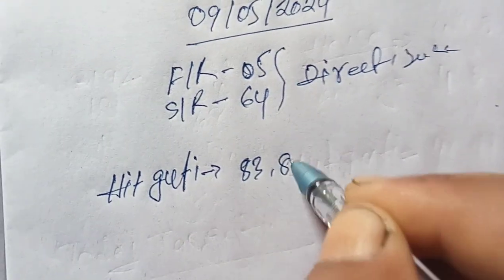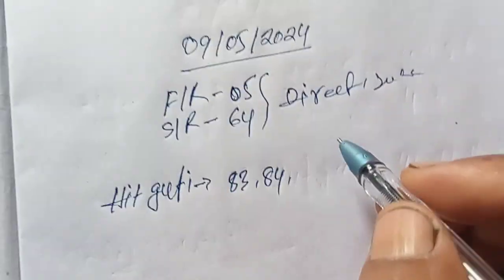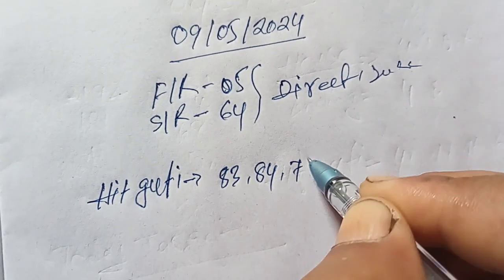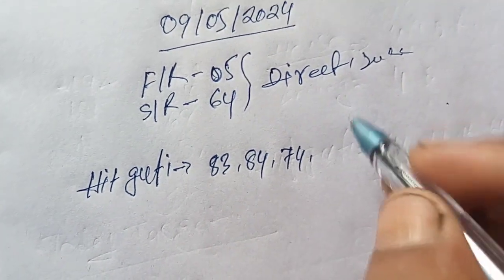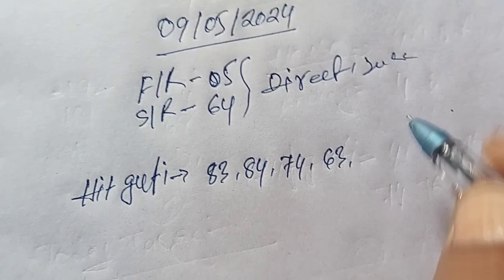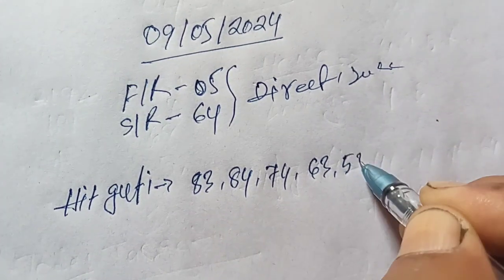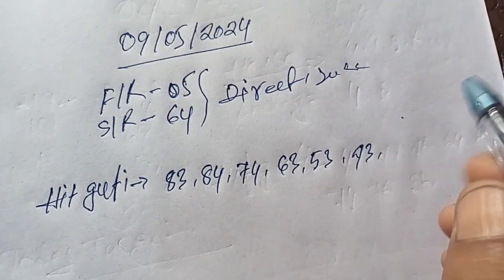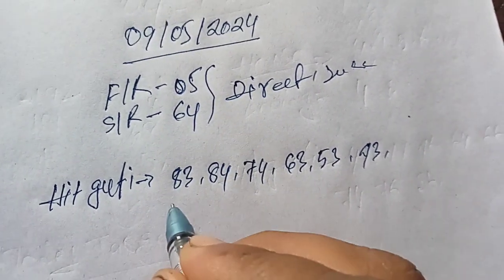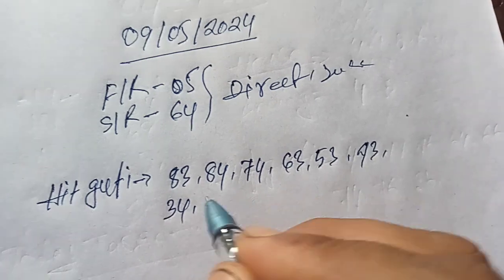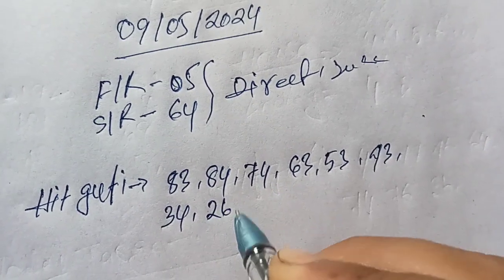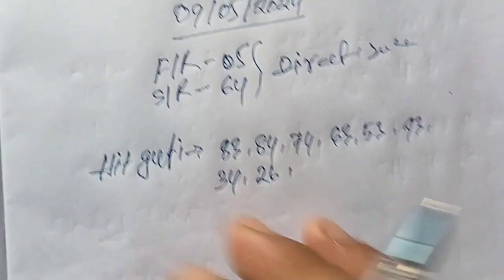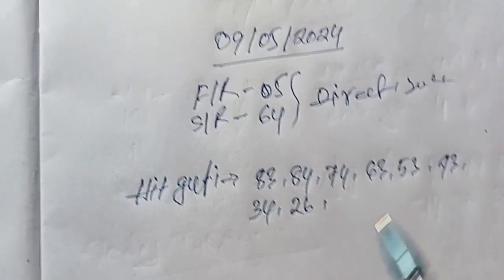So this is the new teer pass. It is now the new teer pass. 53, 43, 34, 2, 6. Now I will hit normal.